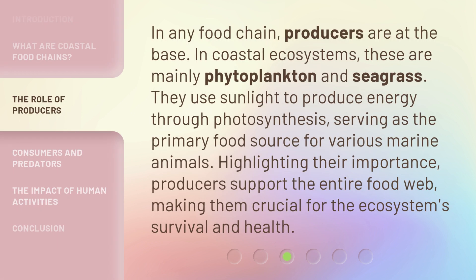In any food chain, producers are at the base. In coastal ecosystems, these are mainly phytoplankton and seagrass. They use sunlight to produce energy through photosynthesis, serving as the primary food source for various marine animals. Producers support the entire food web, making them crucial for the ecosystem's survival and health.